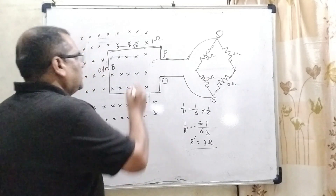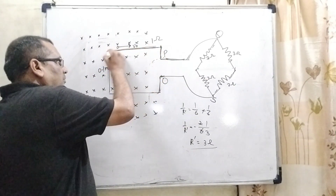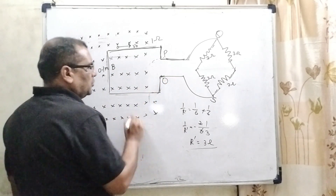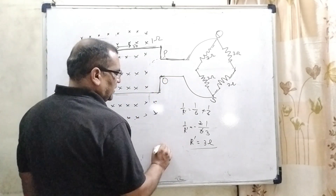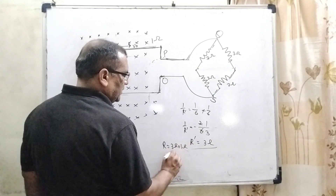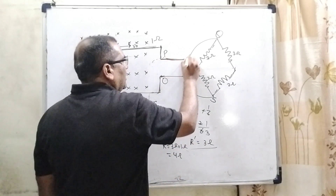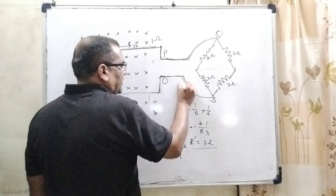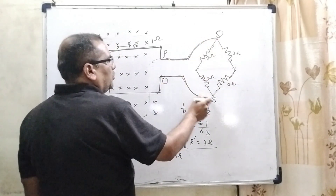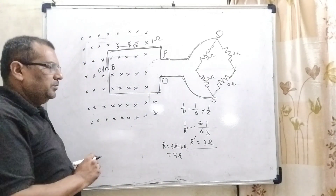And the resistance of this loop — only this side, P to Q — that is 1 ohm. So net resistance is 3 ohm plus 1 ohm, that is 4 ohm. Because here we have been given that the resistance of PQ and OS is neglected. So the net resistance is 4 ohm.